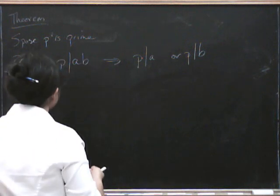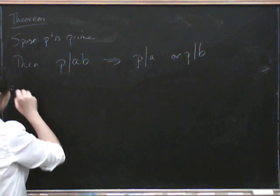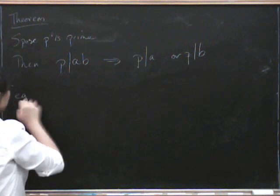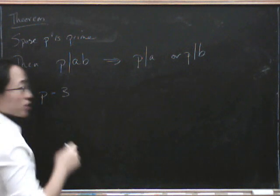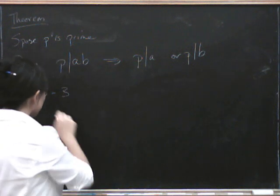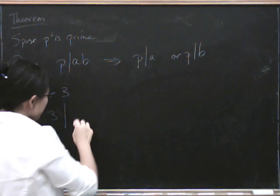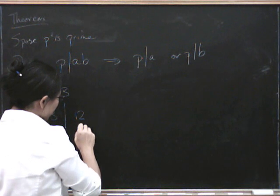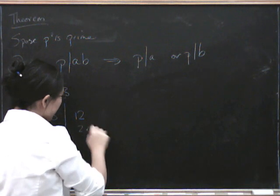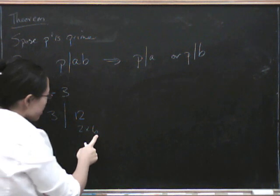So maybe we should have a look at a few examples as well. For example, let's put P equals 3. So what are some numbers that 3 goes into? Well, 3 divides 12. So what can we express that as? 2 times 6. And 3 doesn't divide 2, but it does divide 6.